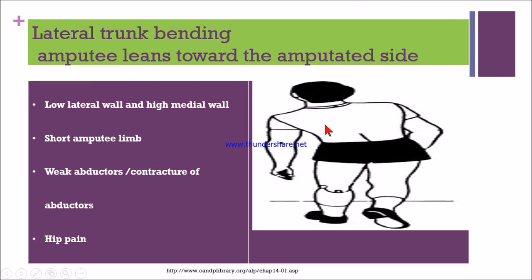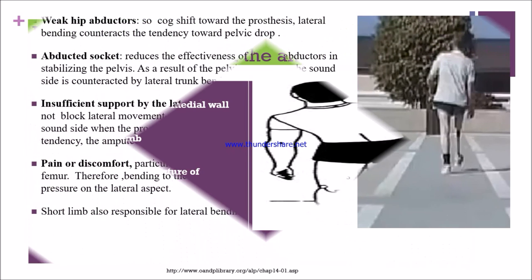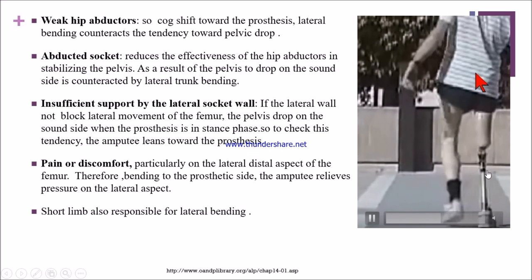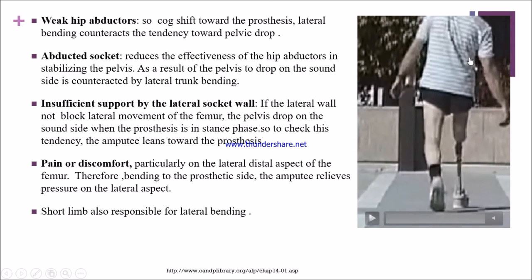If the patient has hip pain, they will again bend laterally. In this video, we can see the patient bending laterally toward the prosthetic side — this is lateral trunk bending gait deviation. When there are weak hip abductors, the center of gravity shifts toward the prosthesis, and lateral bending counteracts the tendency toward pelvic drop on the sound side.